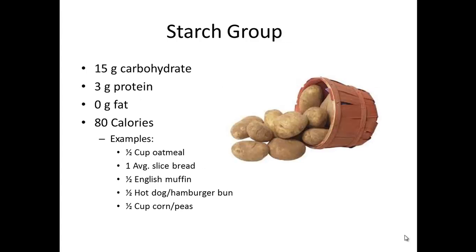We'll start first with the starch group. One starch exchange has 15 grams of carbohydrate, 3 grams of protein, relatively no fat, and 80 calories. Examples include a half cup of oatmeal, a slice of bread, half of a muffin, half of a hot dog or hamburger bun, or a half cup of a starchy vegetable.